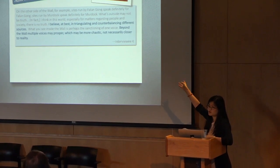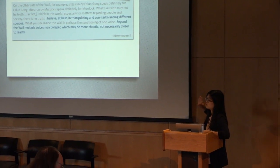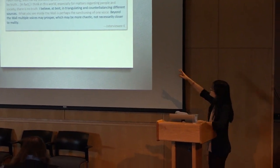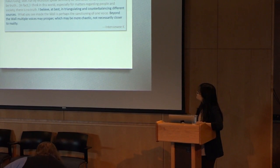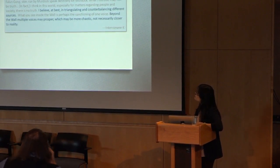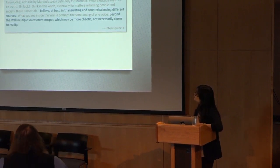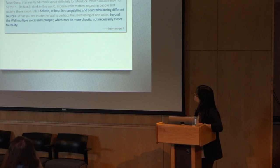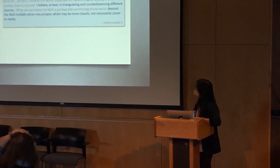For example, this one said: On the other side of the wall, sites run by Falun Gong speak definitely for Falun Gong. Sites run by Murdoch speak definitely for Murdoch. Is there truth outside the wall? In fact, I think in this world, especially for matters regarding people in society, there is no truth. I believe at best in triangulating, counterbalancing different sources.